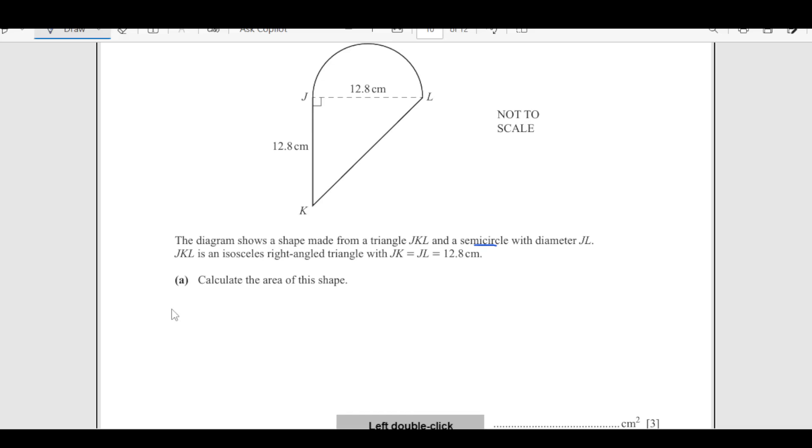So now the question is the diagram shows the shape made from triangle JKL. We have this triangle here and semicircle with diameter JL. These dimensions are given. Calculate the area of the shape. Area of the shape now is area of triangle plus area of, we have to add this area. Let us say this is area A, B. Area of this triangle plus area of the semicircle.